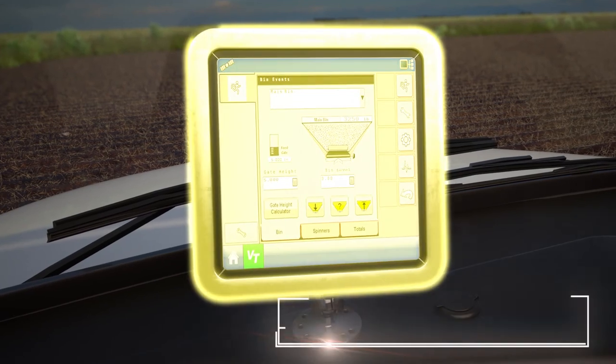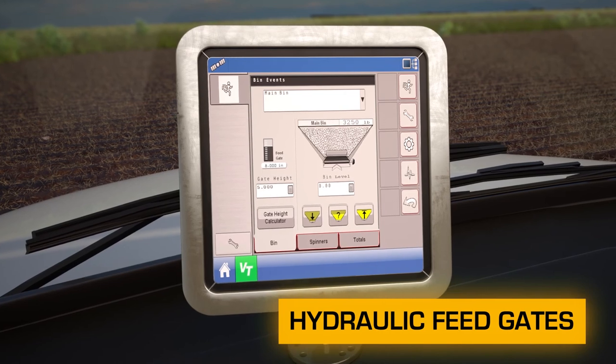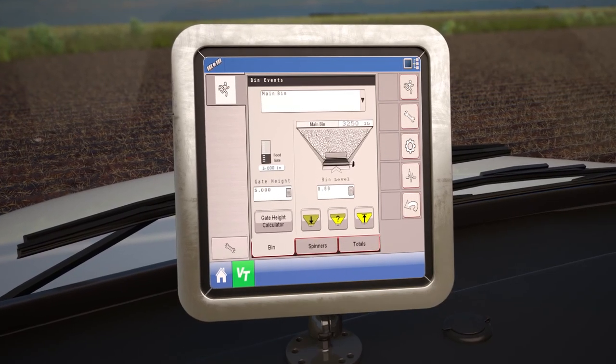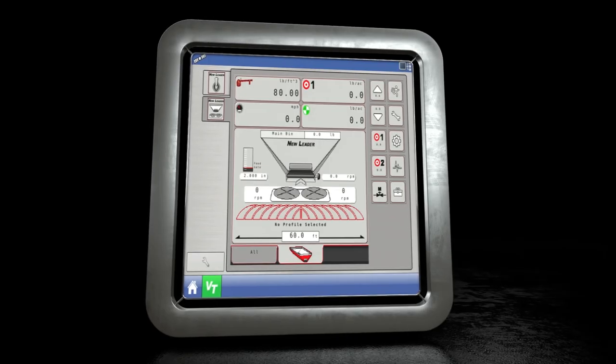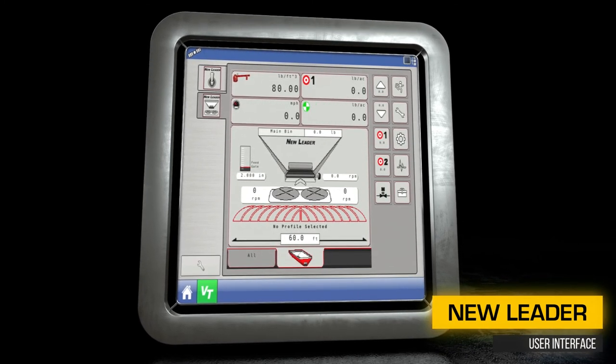Hydraulic feedgate controls allow the operator to adjust feedgate height from the cab. Using the feedgate optimizer, they can calculate and automatically set the feedgate. The NL5000 G5 is equipped with a user interface that's intuitive and easy to use.